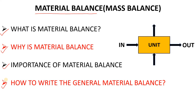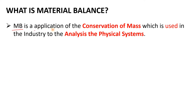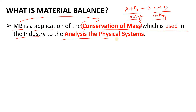Let's start the video with the definition of material balance. Material balance is an application of the conservation of mass — it is based on the conservation of mass, which states that mass can neither be created nor destroyed. For example, if there is a reaction A + B → C + D, and the amount of A and B together is 100 kg, then the products C and D will also total 100 kg. This is used in industry to analyze physical systems.